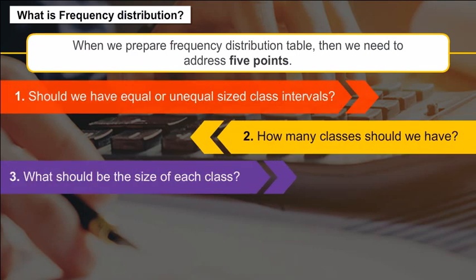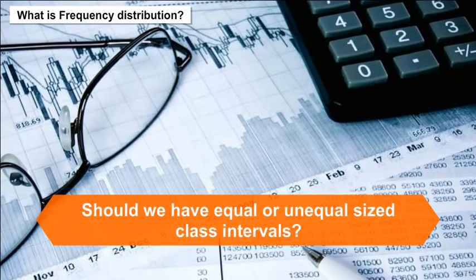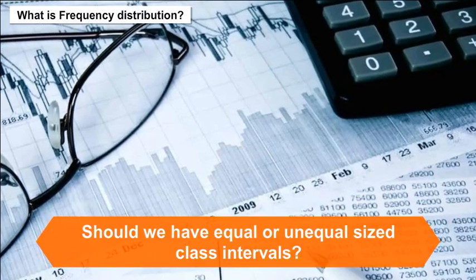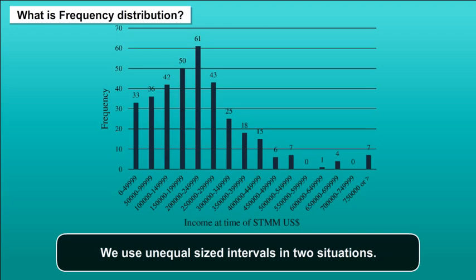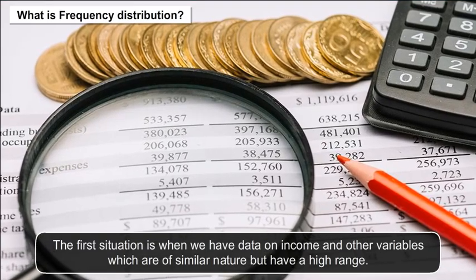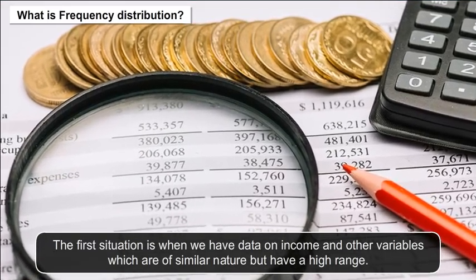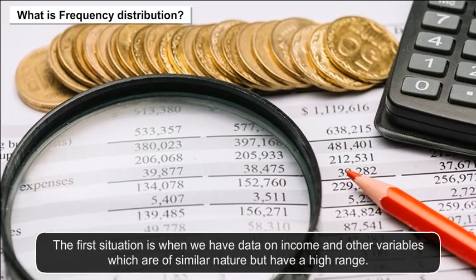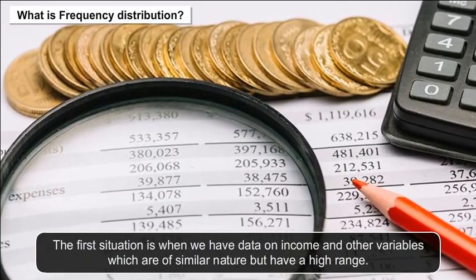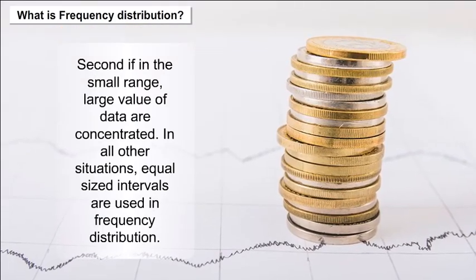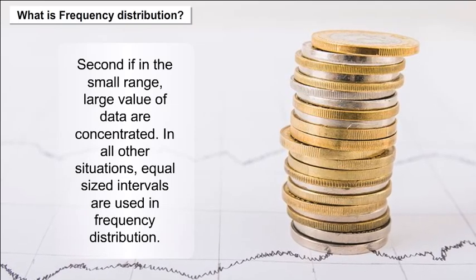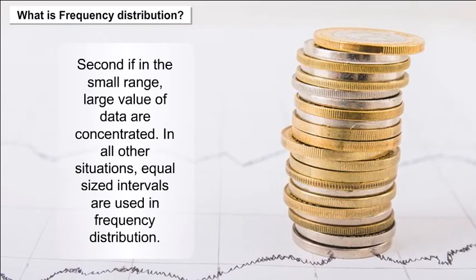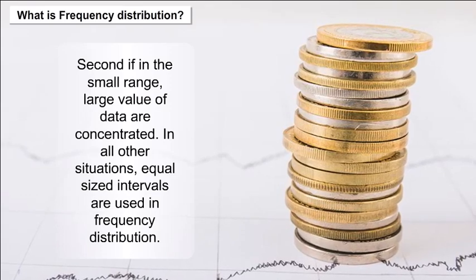How to prepare a frequency table: When preparing a frequency distribution table, we need to address five points. Should we have equal or unequal sized class intervals? We use unequal sized intervals in two situations: first, when we have data on income or variables of similar nature with a high range; second, when large values of data are concentrated in a small range. In all other situations, equal sized intervals are used.